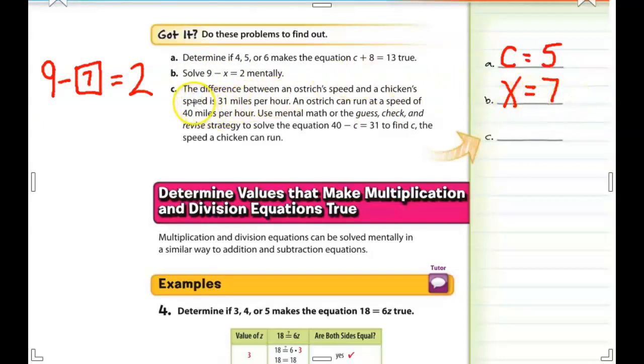Now, for our final practice, for this section anyway, it says the difference between an ostrich's speed and a chicken's speed is 31 miles per hour. An ostrich can run at a speed of 40 miles per hour. Use mental math to guess, check, and revise to solve the equation 40 minus C equals 31. Find C, the speed of the chicken. So if we have 40 miles, which is how fast an ostrich can run, minus chicken, which we don't know, but we do know the difference is 31. So at this time, I want you to guess, check, and revise. 40 minus what number equals 31?